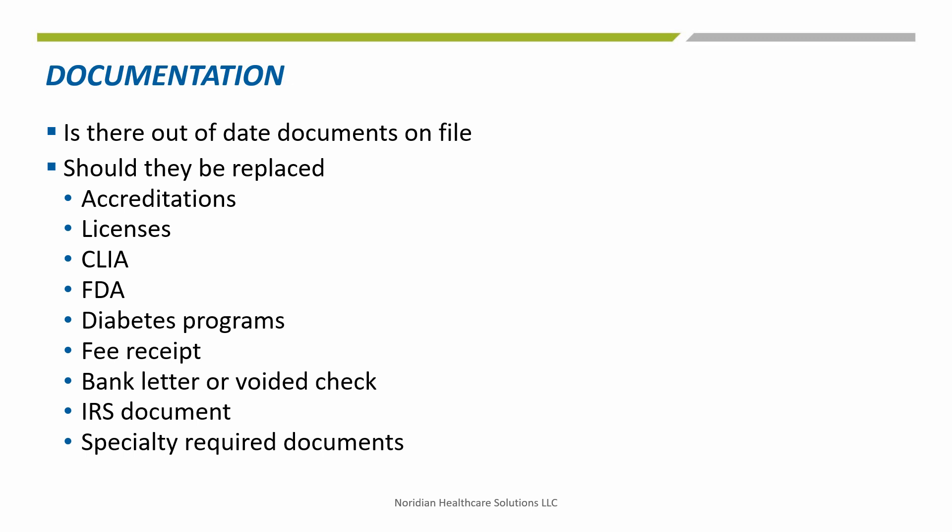Review documents on file and replace any expired or missing documentation. Some of the documents to replace might be accreditations, licenses, CLIA, FDA, etc. Missing documents might include a voided check or bank letter, an IRS document, or others that you believe should be on file. Make sure the most current information on the enrollment record and supporting documents are uploaded.